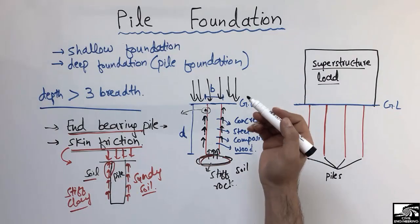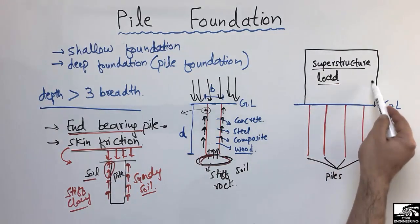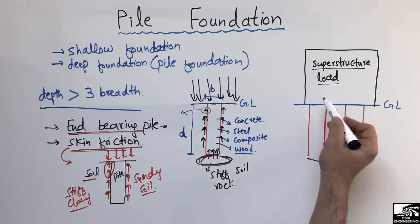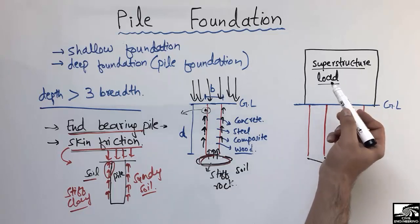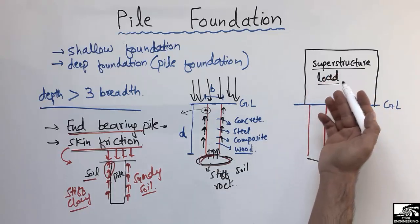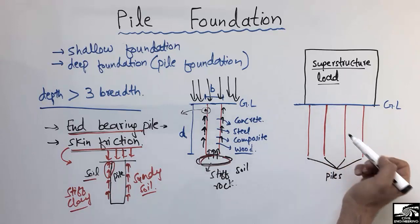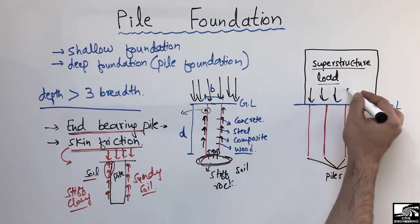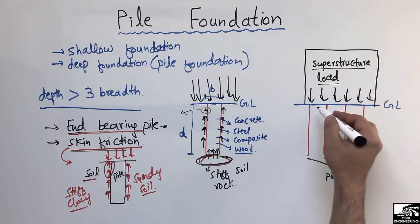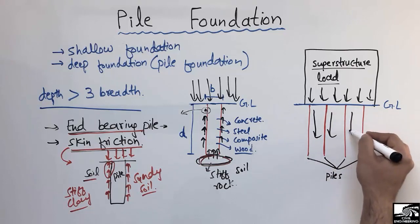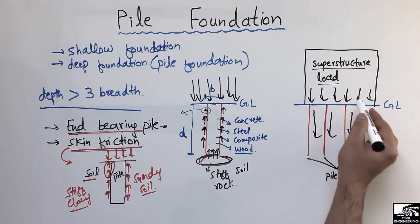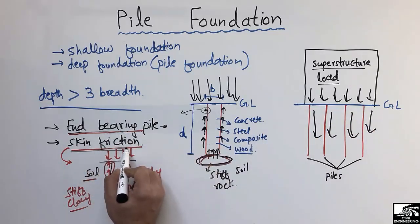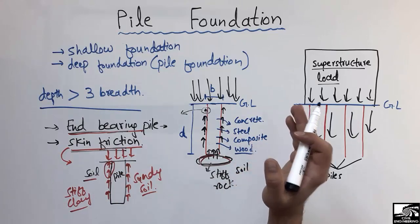To explain pile foundation in a more practical way, consider a superstructure above the ground level with different piles constructed to take its load. The superstructure load may be from bridges, skyscrapers, or multi-story buildings. By providing piles, the load from the superstructure is evenly distributed among all the piles, and all piles work together to resist this load — either by end-bearing phenomena or by skin friction phenomena.